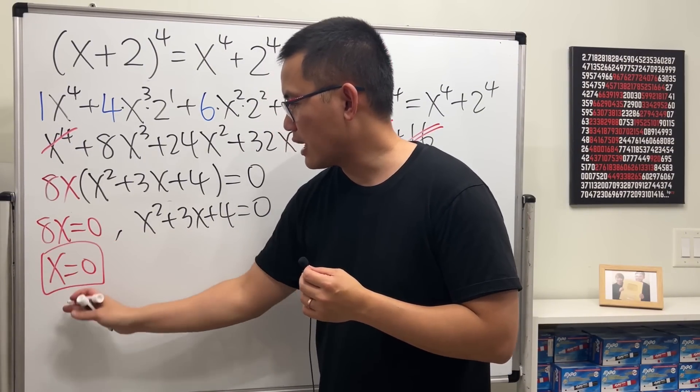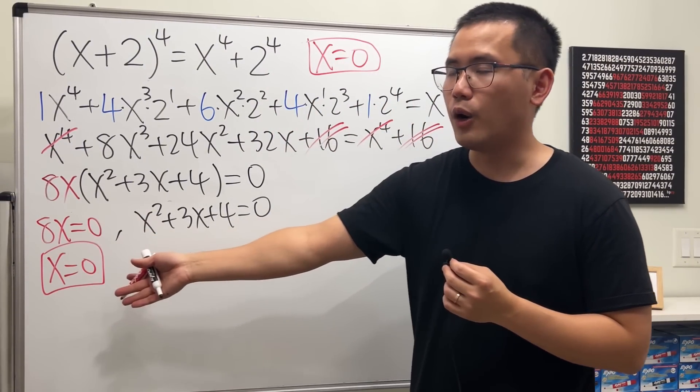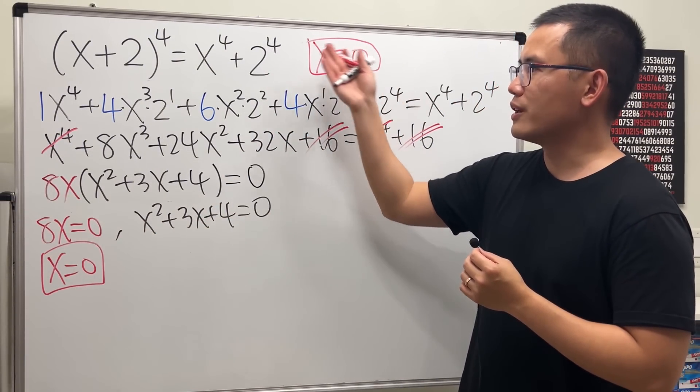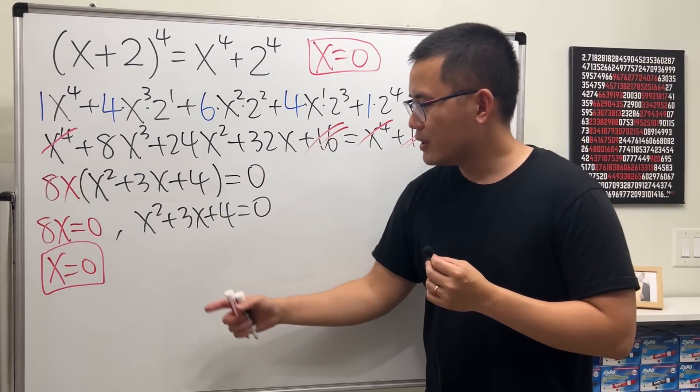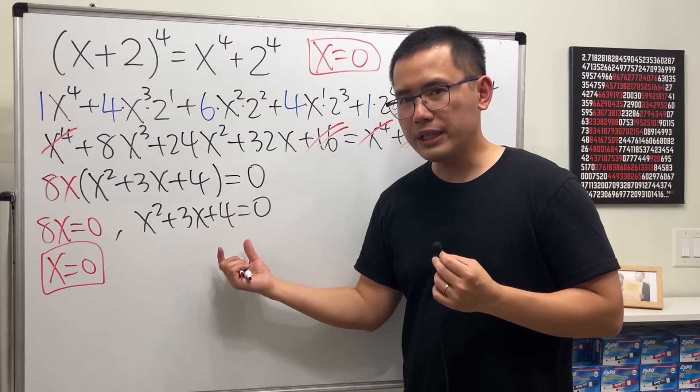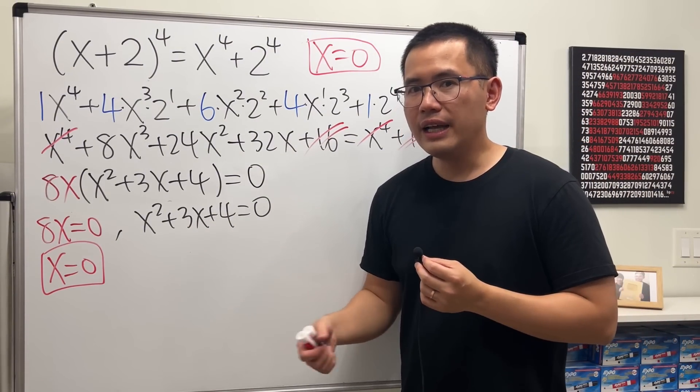For 8x equals zero, divide both sides by 8 and we get x equals zero — and that's the only real solution, just as I told you earlier.